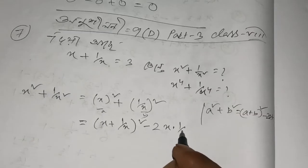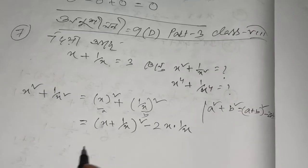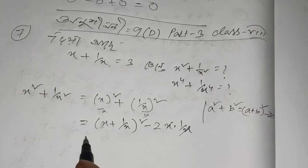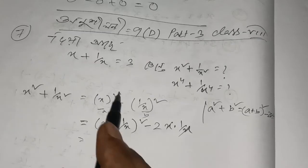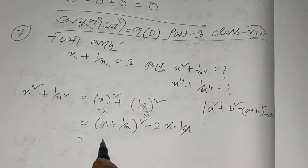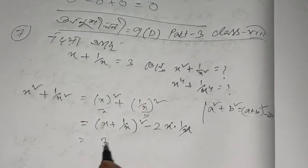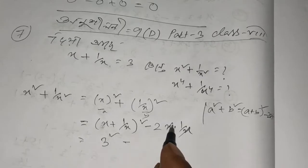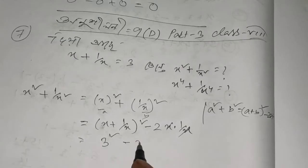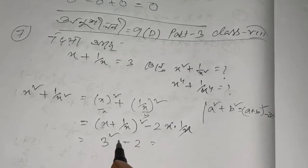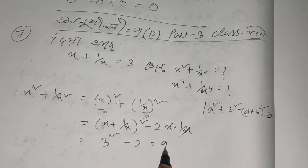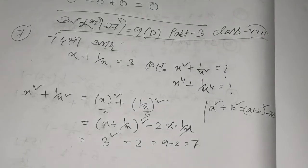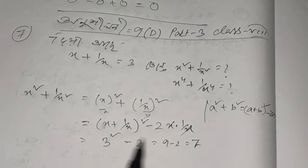x plus 1 by x, times x plus 1 by x, gives x plus 2 by x. So x plus 2 by x, and x plus 1 by x, times x plus 1 by x, gives 2. Here in four.